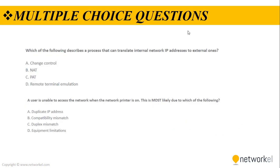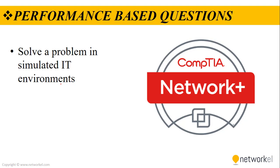Now let's look at multiple choice questions. Multiple choice questions in CompTIA exams ask a candidate to select one or more correct answers to a specific question, and the candidate clicks on the correct answer or answers. For example: 'Which of the following describes a process that can translate internal network IP addresses to external ones?' Or: 'A user is unable to access a network when the network printer is on — this is most likely due to which of the following?' Performance-based questions, as I showed you, require the candidate to perform a task or resolve a problem in simulated IT environments.